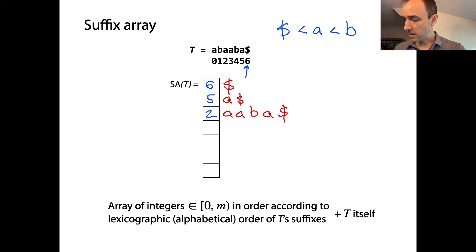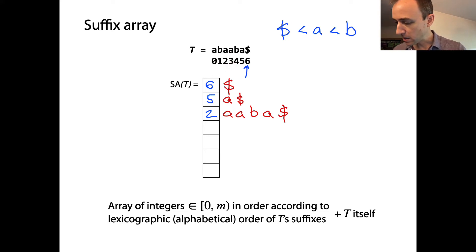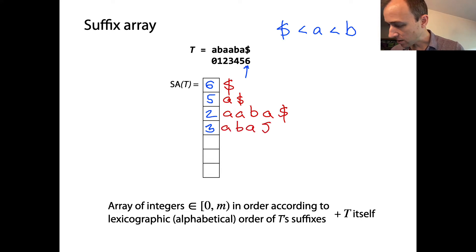Now we've got the two suffixes that start with 'a, b'. They both start with 'a, b, a', but one has a dollar sign next, whereas the other has an 'a' next. The one that has a dollar sign next wins, so that's the one at offset three — the suffix 'a, b, a$'. Then next is offset zero, which is the suffix 'a, b, a, a, b, a$'.